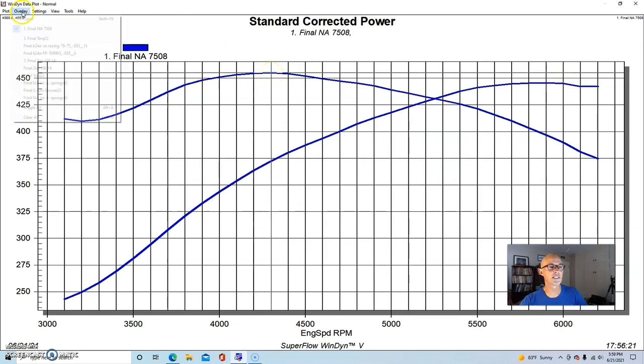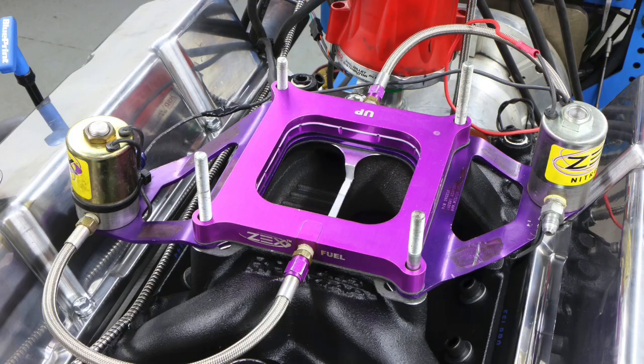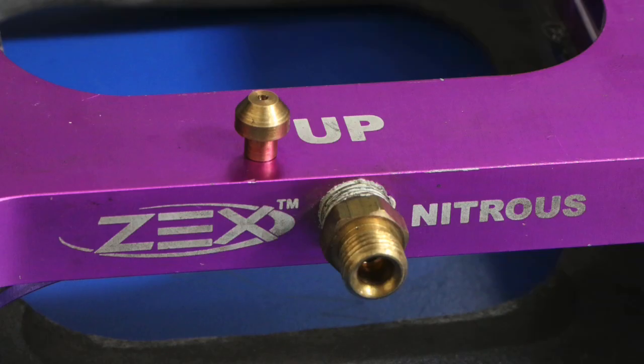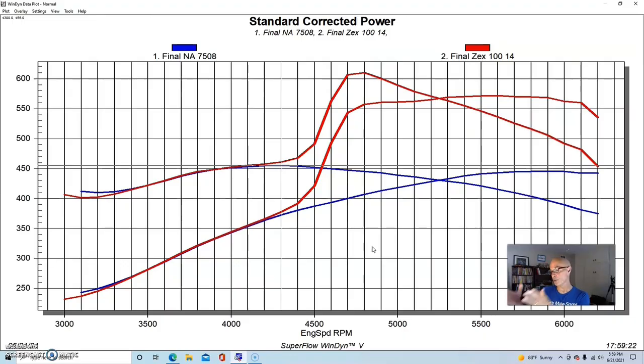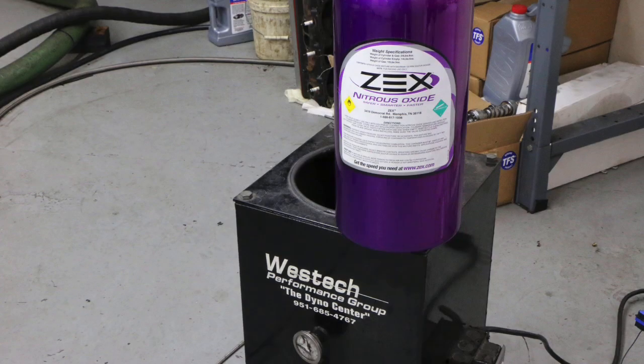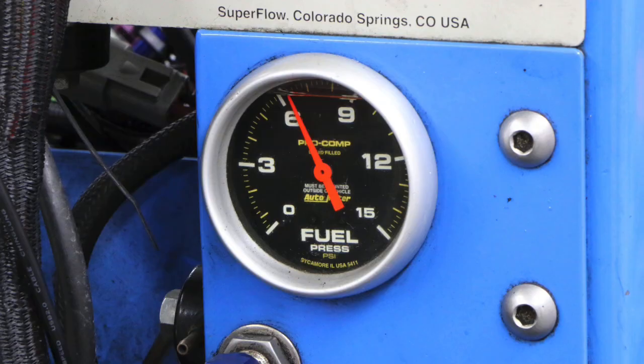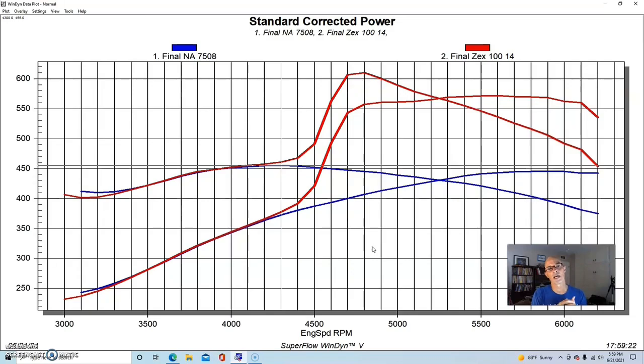The first thing we did was add a quick shot of nitrous. This was done with a ZEX perimeter plate. We put jetting in it to add 100 horsepower, made sure to heat the bottle to optimize the flow rate, filled it before we ran the test, and optimized the air-fuel by dialing in the fuel supply to the nitrous and fuel jetting.